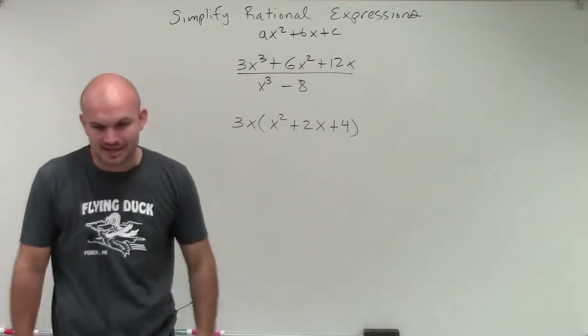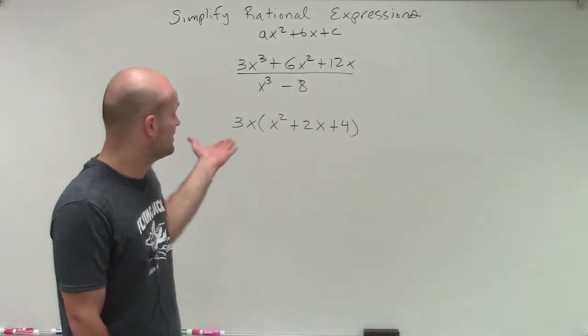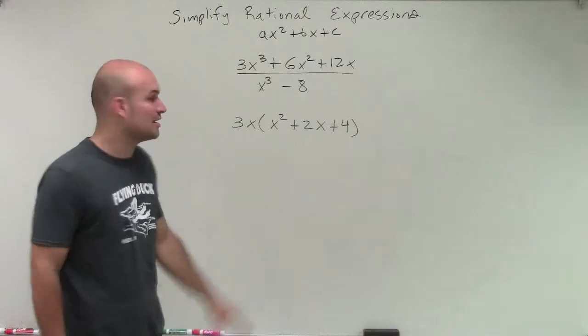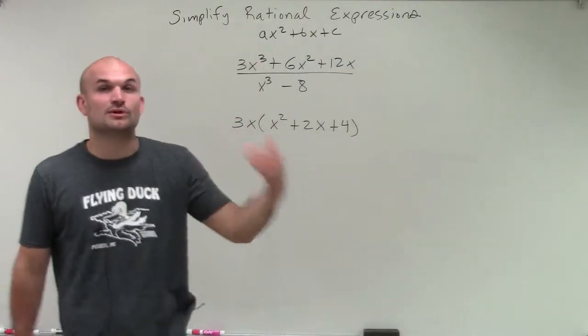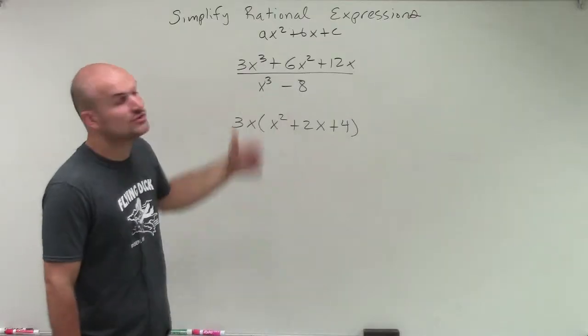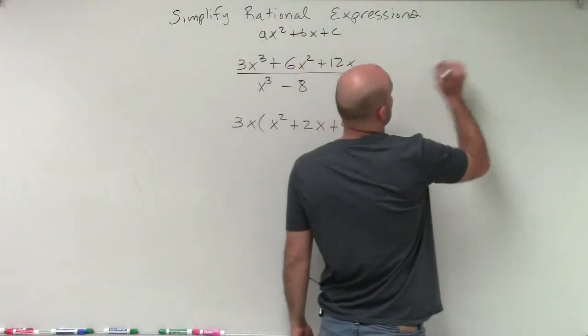Now you look at your denominator and you say, well, that doesn't look any easier. That doesn't look like it's going to eliminate anything in my numerator. But we do notice it's a cubed. And when we're looking at a cubed, we want to look at can we factor out a GCF, or can we use the difference of two cubes?